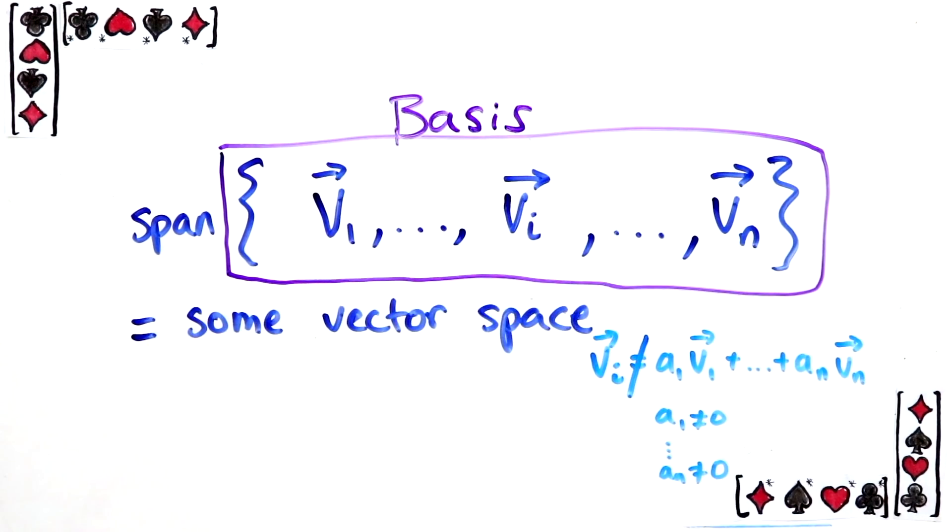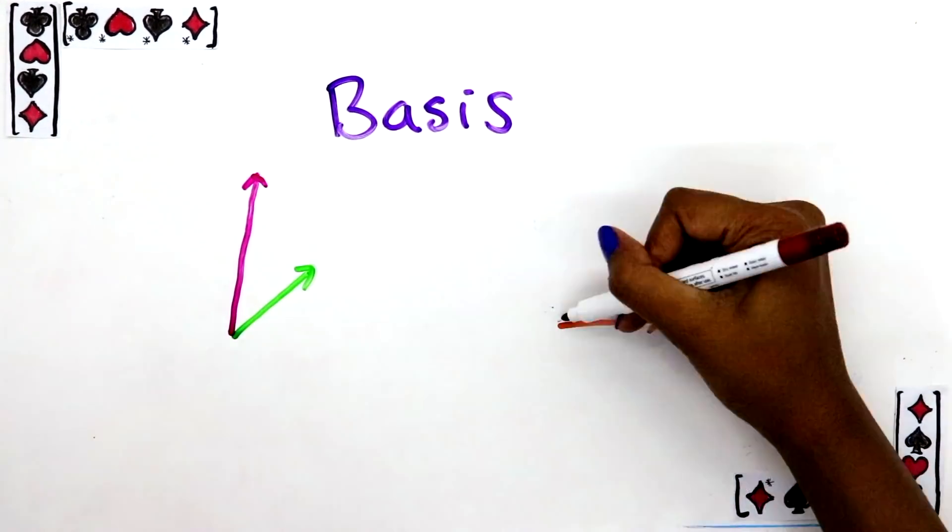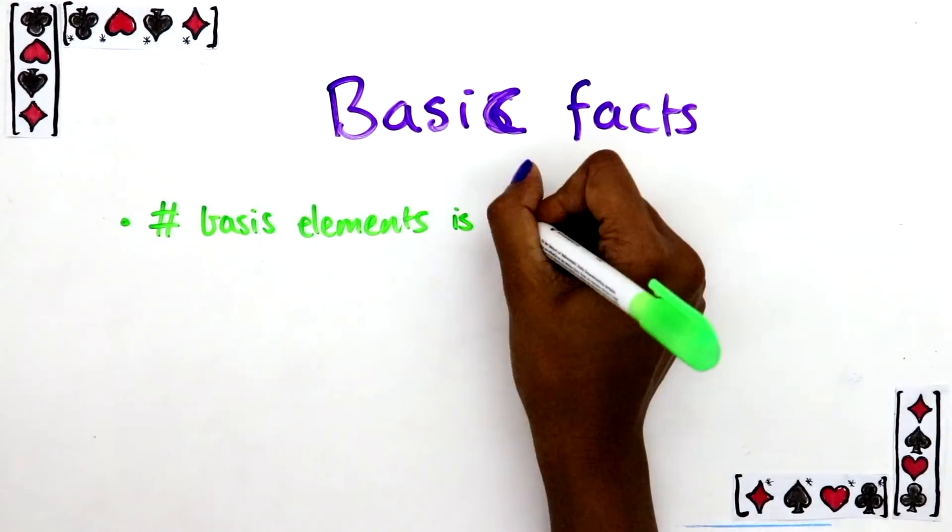Obviously, for any space of vectors, there are many different choices of basis. For example, both of these bases work for the plane, and so it's not unique. But there are two reasons why they're still very important. Firstly, for any vector space, the number of basis elements is fixed. It's called the dimension of the space.